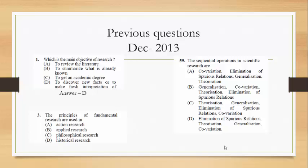To get an academic degree, again, it's not really an objective of research. And, of course, the answer is D, to discover new facts or to make fresh interpretation of existing material. The next question is, the principle of fundamental research are used in action research, applied, philosophical or historical. Answer is B, applied research.